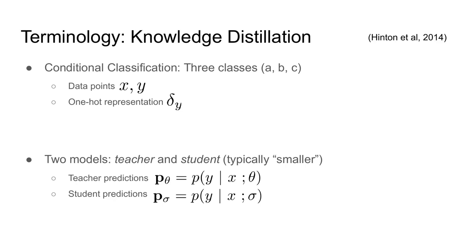We'll have our teacher model, which I'll represent as P theta. This is the better model that we've trained on lots of data and probably lots of parameters. We'll also have our student model, which I'll represent as P sigma. This is the model we'd like to train, and it may have many fewer parameters and perhaps even an entirely different architecture than our teacher model.